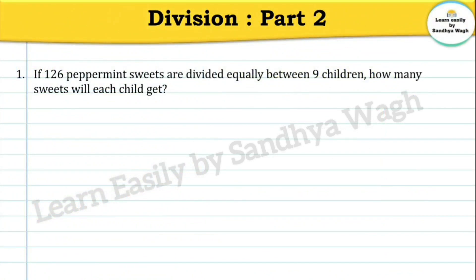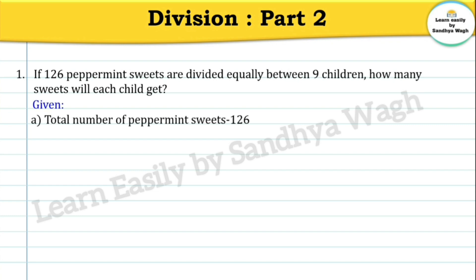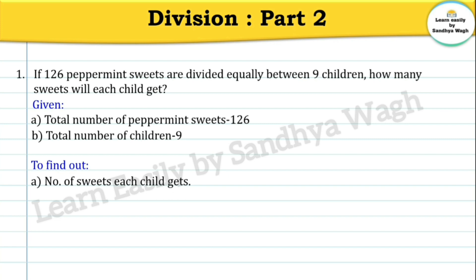Question 1. If 126 peppermint sweets are divided equally between 9 children, how many sweets will each child get? What is given in this word problem? Total number of peppermint sweets: 126. Total number of children: 9. What do we have to find out? Number of sweets each child gets.